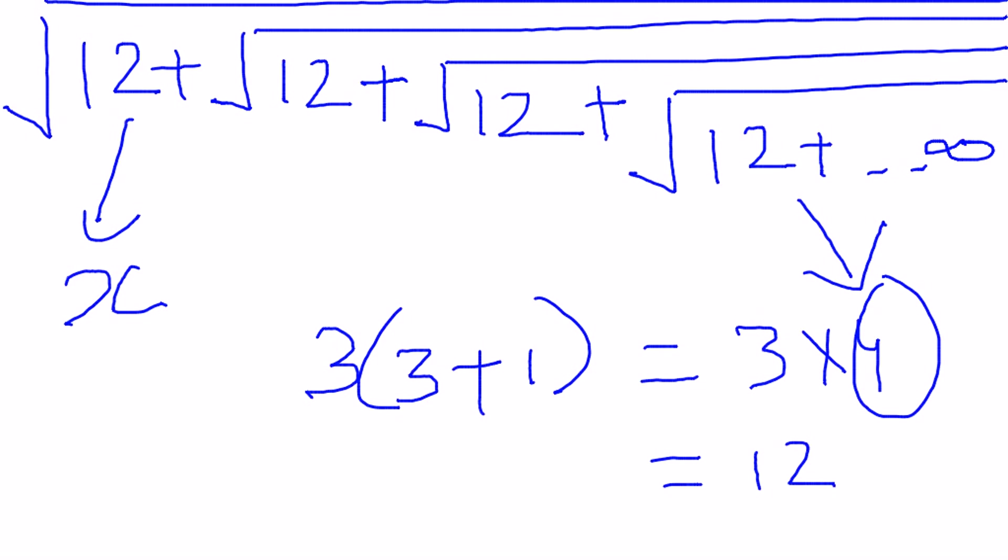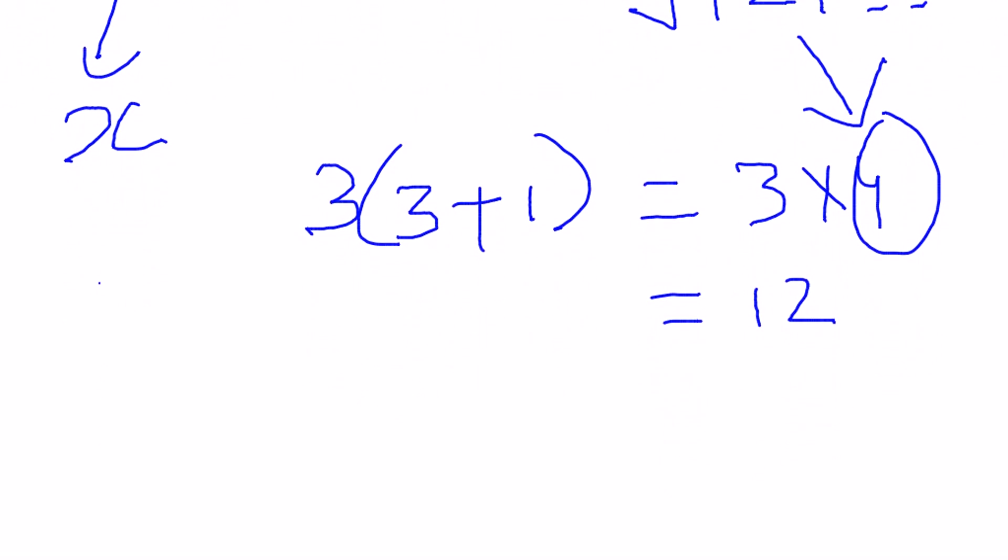Now the things to notice, which generally people ask using this trick, is you might also ask me that in this case I could have done 6 times 2, because 6 times 2 is also 12.